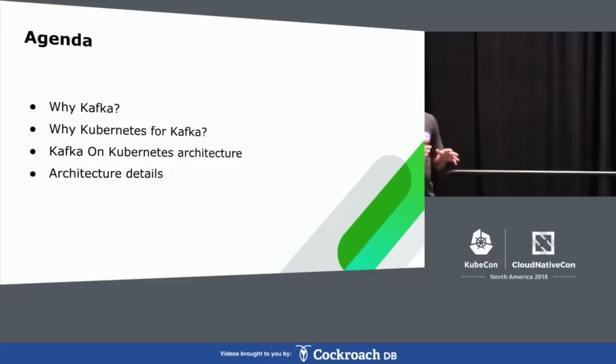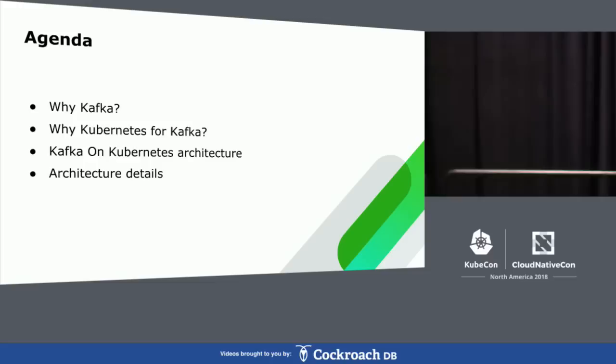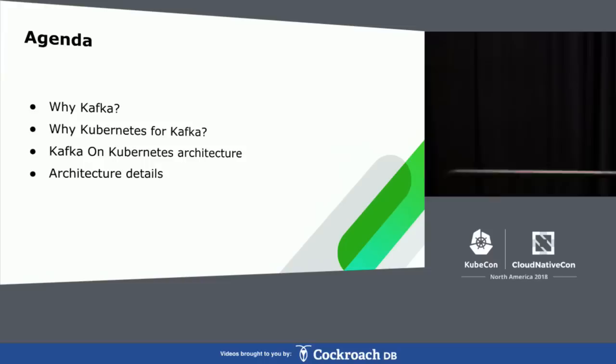I'll quickly go over the agenda of the talk. We'll talk about why we decided to use Kafka, why we chose to run Kafka on Kubernetes. Then I'll cover the Kafka on Kubernetes architecture — what Kubernetes objects and resources come into play. I'll focus on problems as much as possible, because problems will be common across all of us, even if solutions differ.